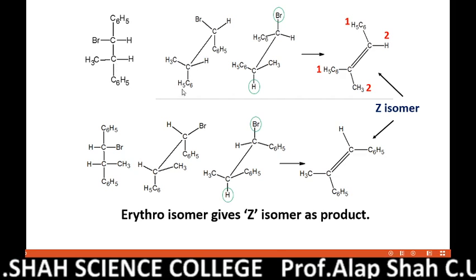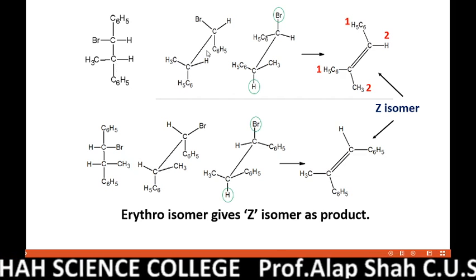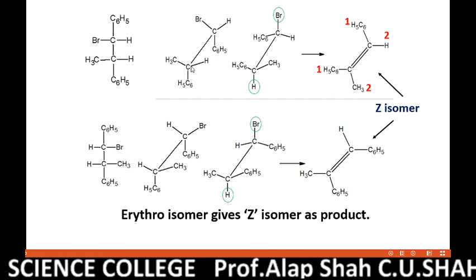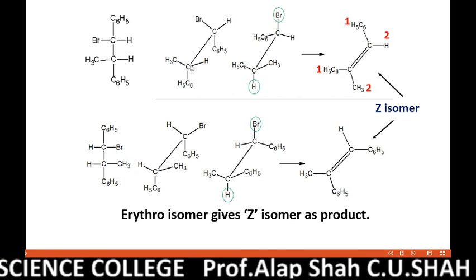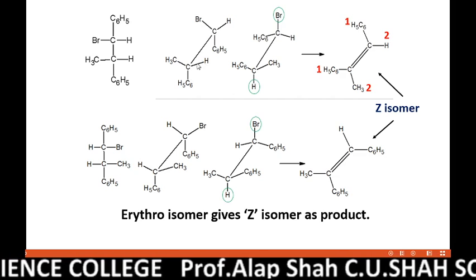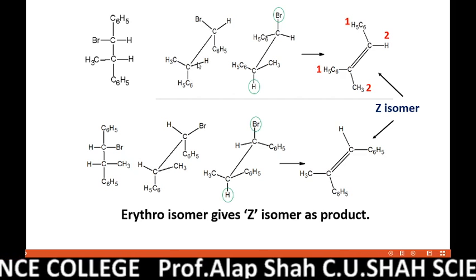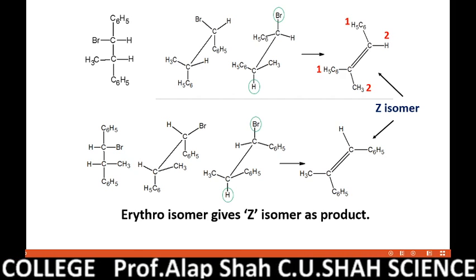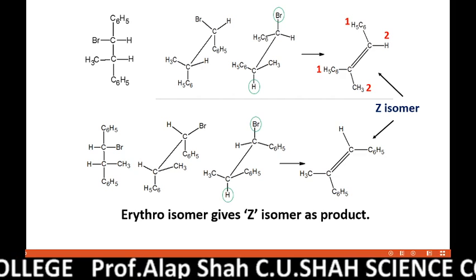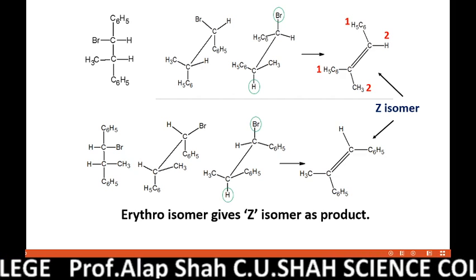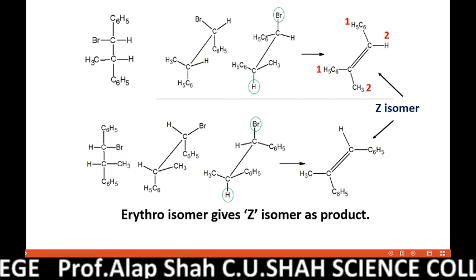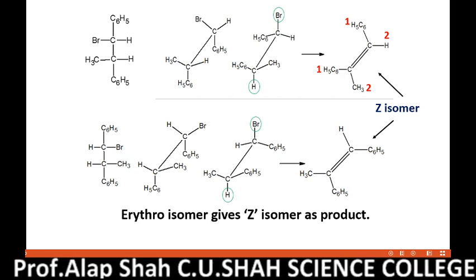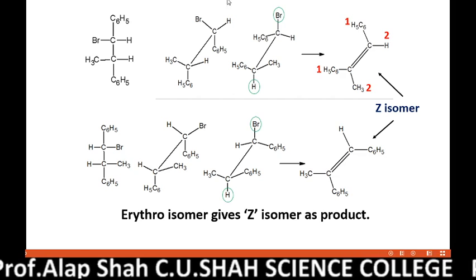In this Sawhorse projection, you can see that bromine and its beta hydrogen have a mutual bond angle that is not 180 degrees. Since E2 elimination occurs as per anti-elimination, the mutual bond angle between bromine and its beta hydrogen must be 180 degrees.